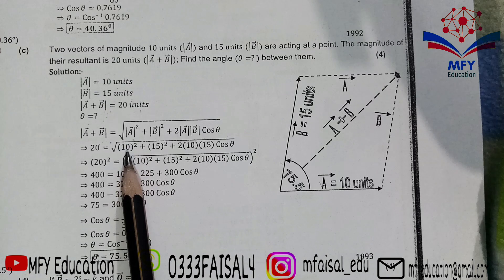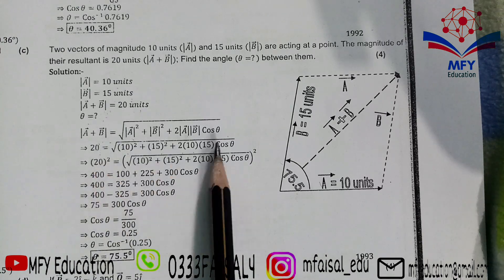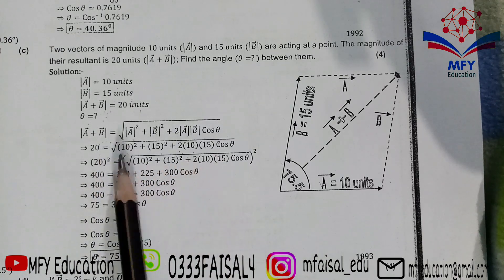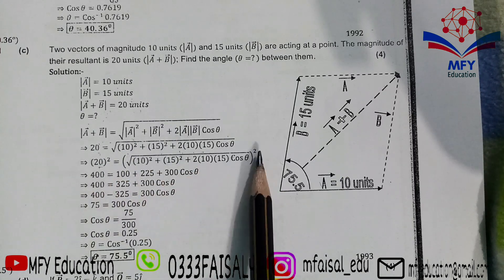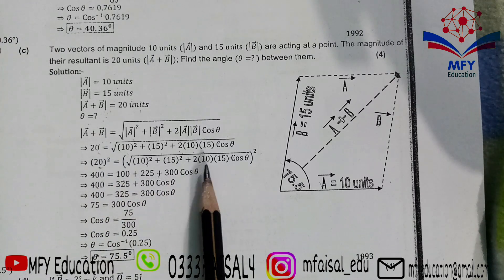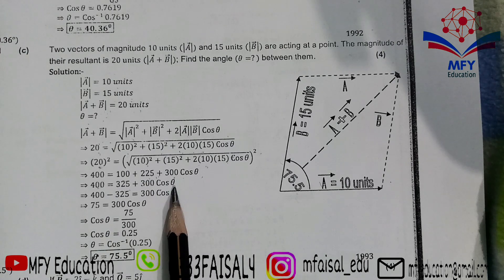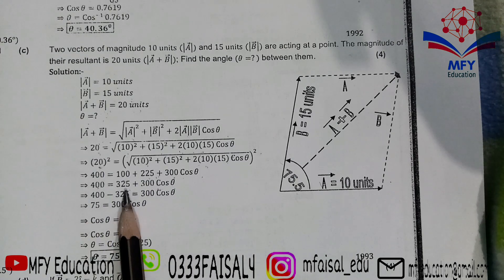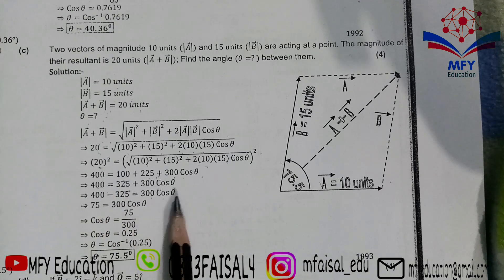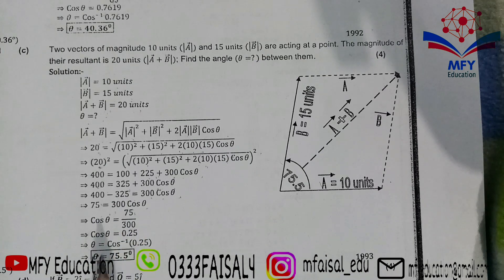Squaring both sides: 400 = 100 + 225 + 300 cos θ = 325 + 300 cos θ. Moving 325 to the left: 75 = 300 cos θ, so cos θ = 75/300 = 0.25. Taking cos inverse: θ ≈ 75.5°.